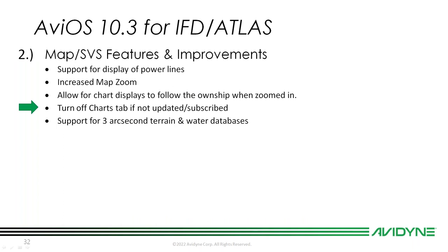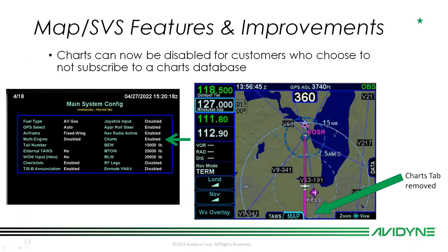Another big one: we can now turn off the charts tab if you're not updated or subscribed to a Jeppesen chart database. In the main system config page in maintenance mode you can enable or disable charts. Once back in flight mode, the chart tab simply won't be there anymore. Folks who don't subscribe to a Jeppesen chart database won't get the expired charts message — they can just shut it off.